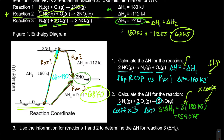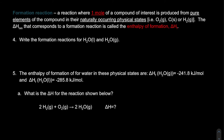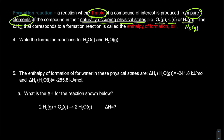Now let's look at a specific application of Hess's law: formation reactions. A formation reaction is one where one mole — this is really important — one mole of a compound of interest is produced from pure elements in their naturally occurring physical states, such as O2 gas, solid carbon, or H2 gas. The enthalpy change for that reaction is called the enthalpy of formation — think of it as the energy cost to form one mole of that substance.